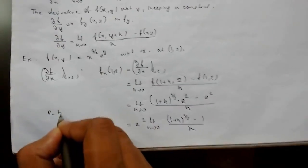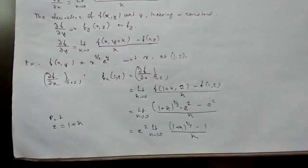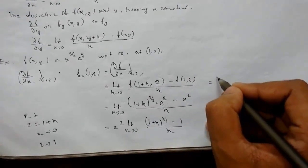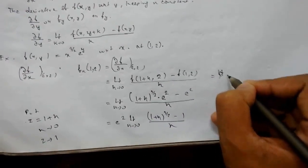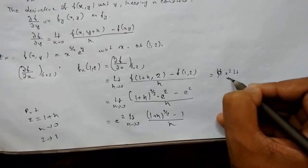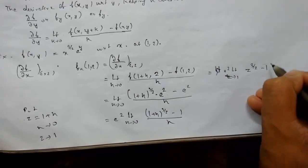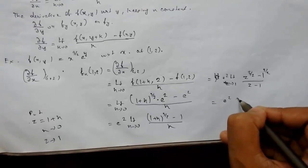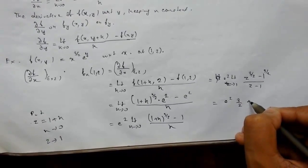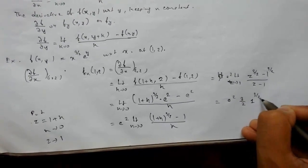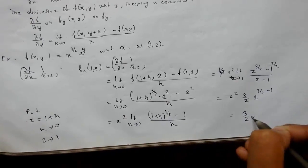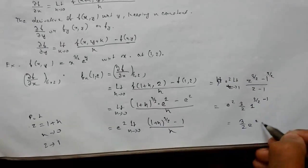Now we substitute z = 1 + h, so as h tends to 0, z tends to 1. The expression becomes e² · limit as z tends to 1 of [z^(3/2) − 1^(3/2)] / (z − 1). Applying the standard limit formula, this equals e² · (3/2) · 1^(3/2 − 1) = (3/2)e². So this is our answer.